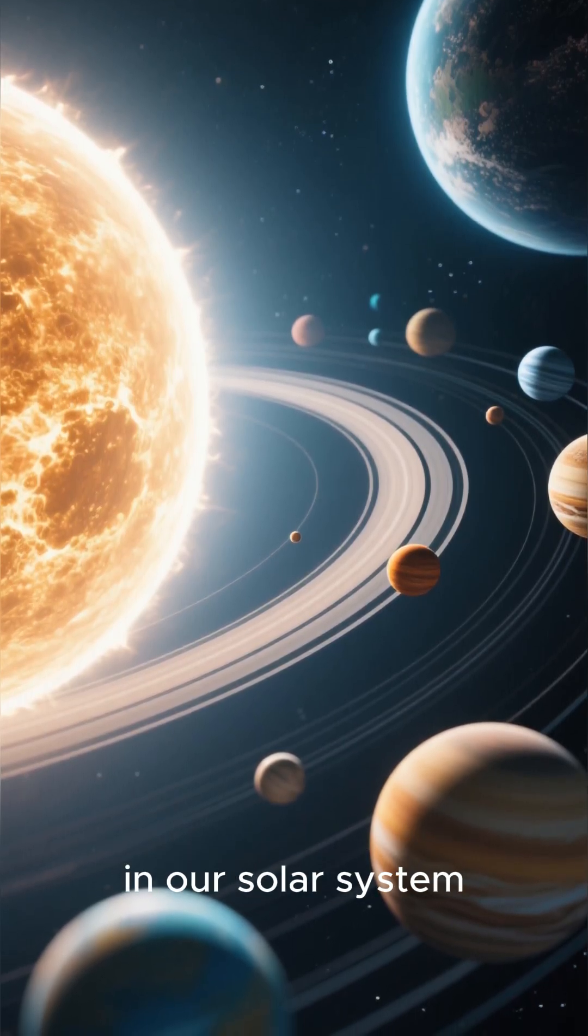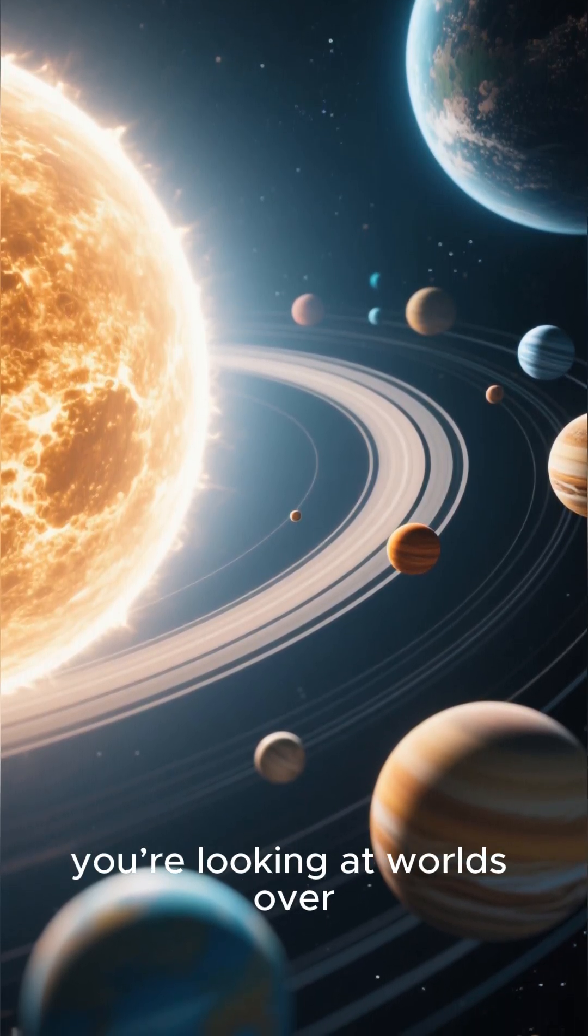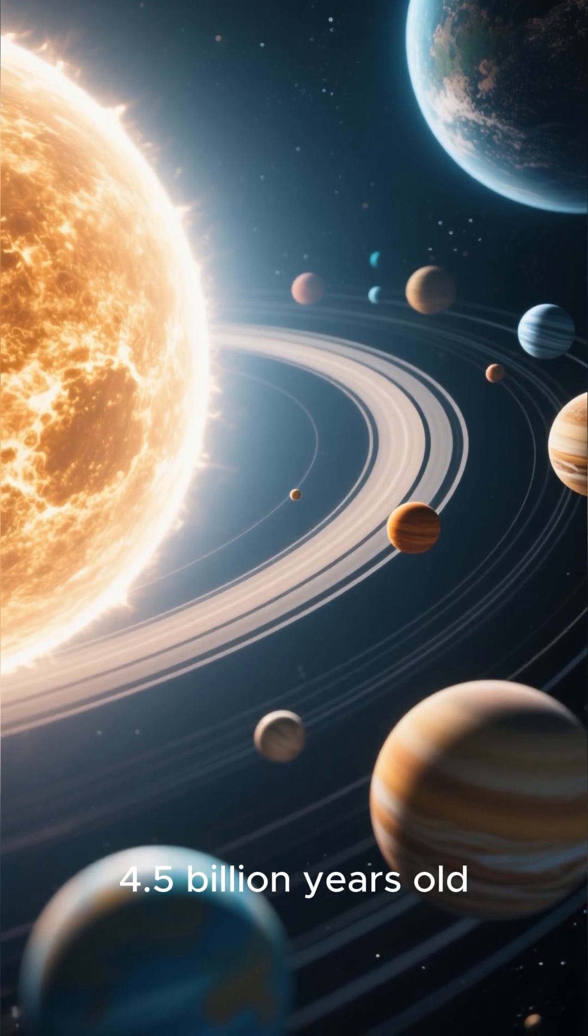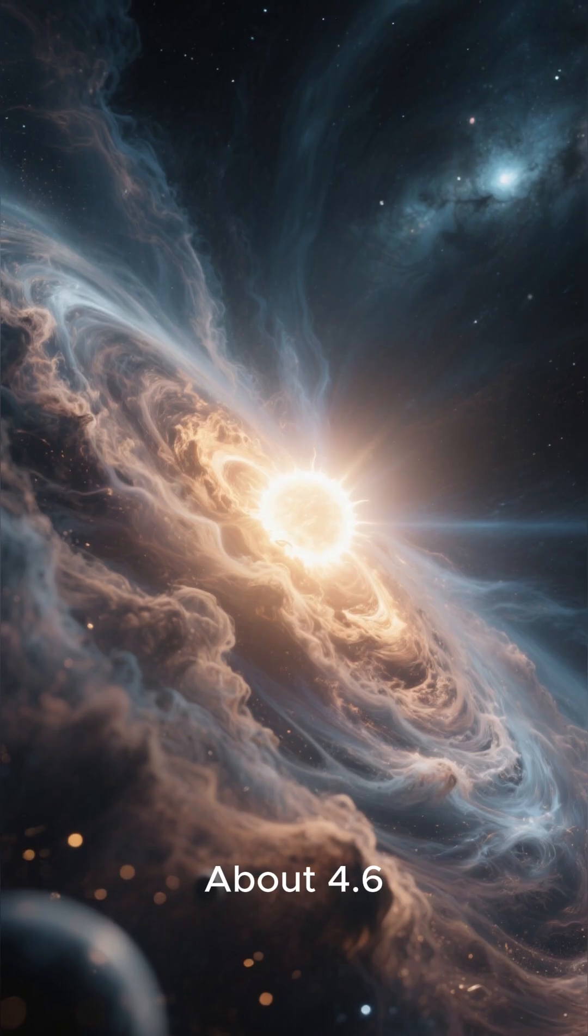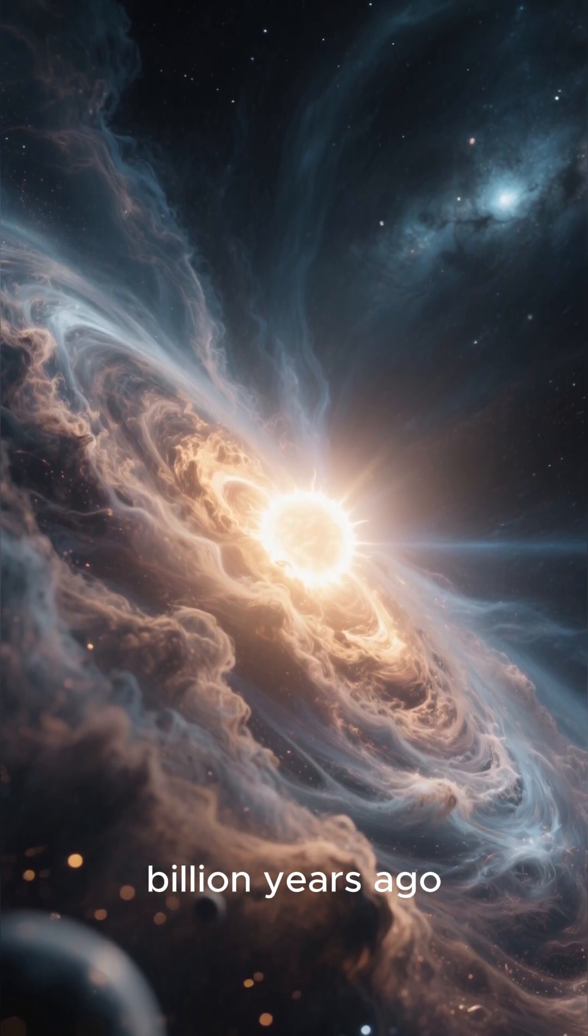When you look at the planets in our solar system, you're looking at worlds over 4.5 billion years old, about 4.6 billion years ago.